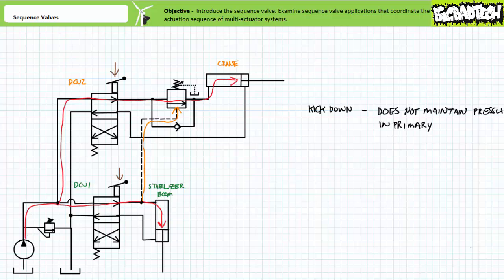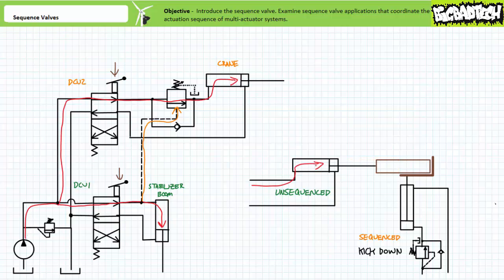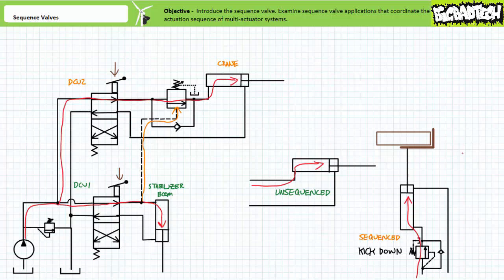This particular circuit coordinating the stabilizing booms and crane would not be an ideal candidate for a kickdown style sequence valve, since the booms must be relied upon as a solid base. Consider, however, a circuit that uses the first unsequenced cylinder to shove a load onto a platform or conveyor belt, then using another cylinder sequenced by a kickdown style sequence valve raises, lowers, pushes, pulls, or otherwise manipulates the now supported load. For this application, there really would be no reason to maintain pressure in the primary circuit, given it's now supported by a platform or conveyor belt, thus the choice of the more efficient kickdown style sequence valve.